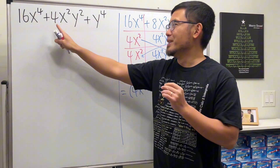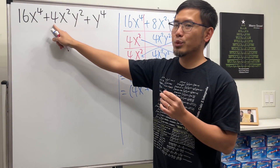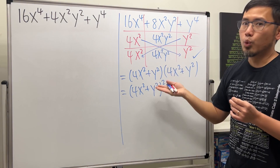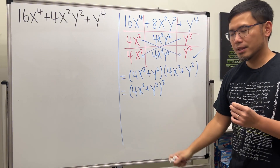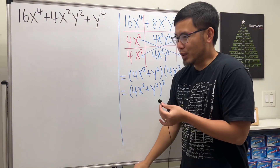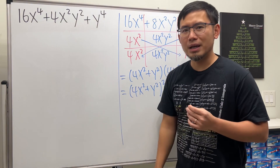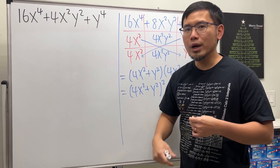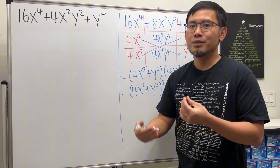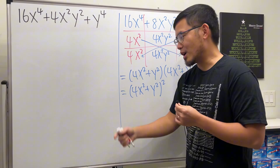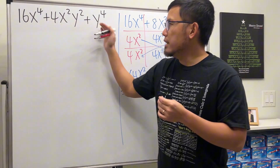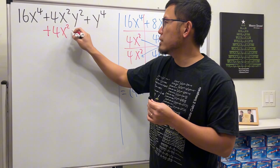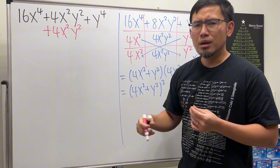Now, is it possible to do the same thing for the original problem? Not yet — because in the original we have a 4 in the middle, and we really need an 8 for this to work out. That's why you ran into trouble earlier. But don't give up: if we only have 4, why don't we give it 4 more?